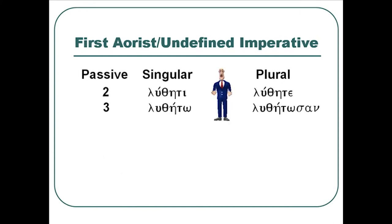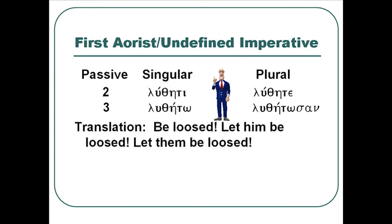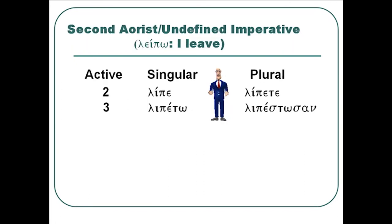Now for the first aorist undefined imperative for the passive forms, you have luthēti, luthētō, luthēte, luthētōsan. And so this is our endings, the t-to-ti-to-tōsan that we had before. Translated is be loosed or let him be loosed or let them be loosed or something like that. Notice the thē, the theta-eta, typifies this passive form, which is no problem. We've seen that before.